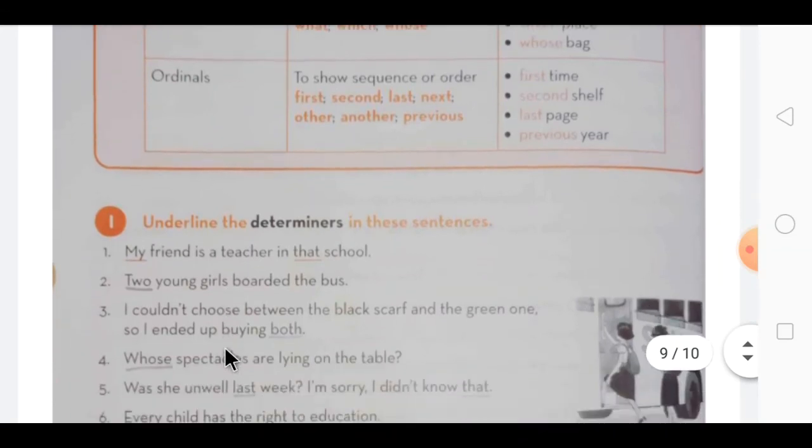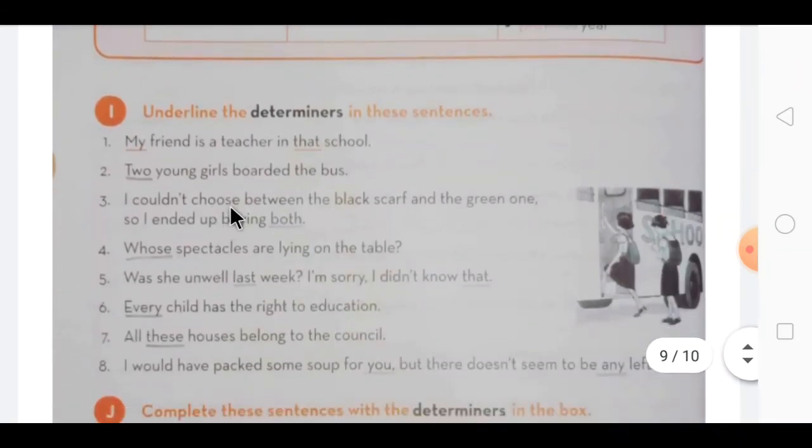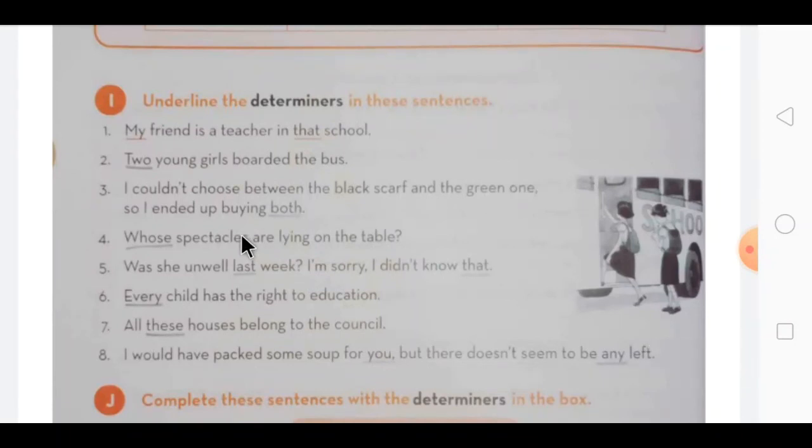Now in this next exercise dear children, you have to underline the determiners in these sentences. Whatever determiners I have explained to you so far - possessive, articles, or demonstratives, quantifiers, or interrogative, or ordinals - whatever are coming, determiners in this you have to underline. Here two - I have explained cardinal also with ordinal, which specifies the number, that is called cardinal. So two came. Then both, whose, last, that, every, these, you, any. All these include all determiners. So you have to underline those determiners.